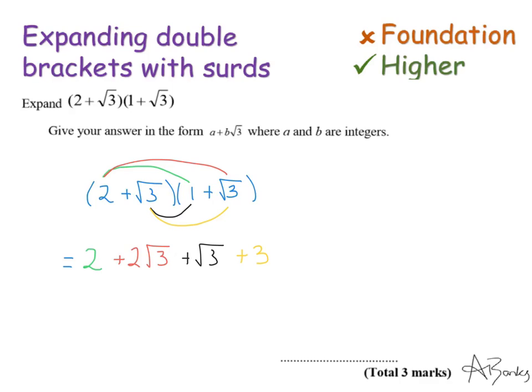That's what I get from expanding my double bracket, and now we've just got to simplify to get the final answer. I have two and three, which is just five. And then I have two root three add root three, so I have three root three. And that is my final answer.